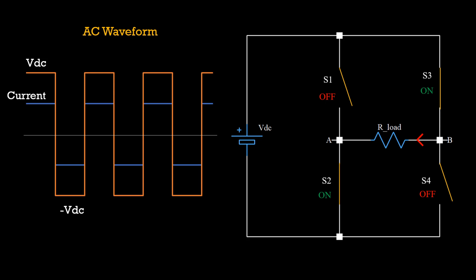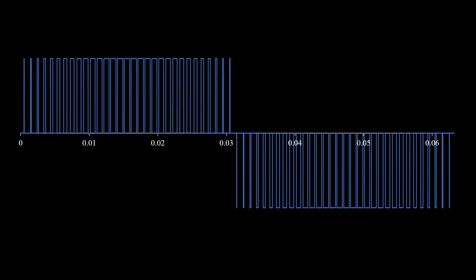However, what we needed was a sine wave and not a square wave. One way of achieving this is by manipulating the square wave to look like this. If you just look at this figure, it will not make sense. But if you average this waveform, then you get a nice sine wave.